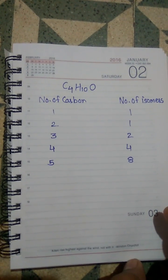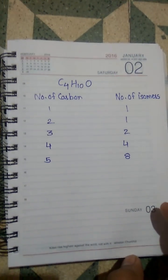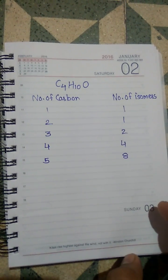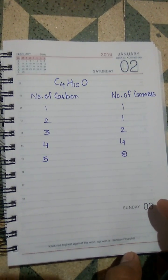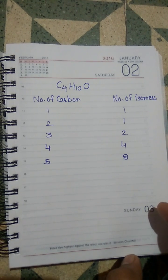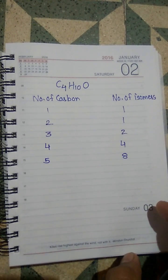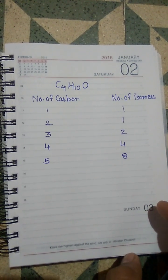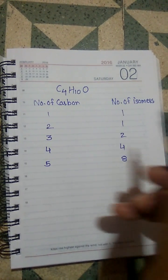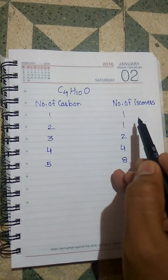Hello everyone, welcome to the tips and tricks of organic chemistry. Today's topic is how to find out the number of isomers of alcohols. This tip is only useful for finding out the number of alcohol isomers, and it is totally dependent upon the number of carbons. If you have only one carbon in the alcohol, then your isomer count will be one.